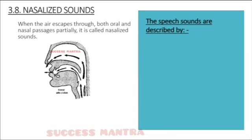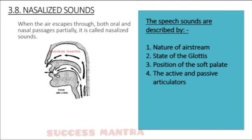Speech sounds are described by: the nature of the airstream, the state of the glottis, the position of the soft palate, and the active and passive articulators. In the examination, to describe a speech sound you need to state: whether it is the pulmonic, glottalic, or velaric airstream mechanism; the state or position of the glottis; whether the soft palate is raised or lowered; and the type of articulators used — active or passive.